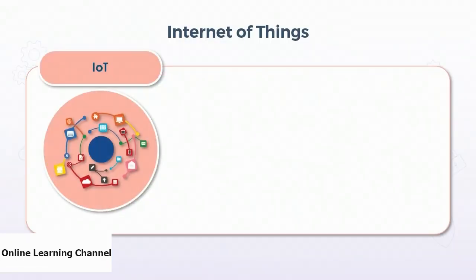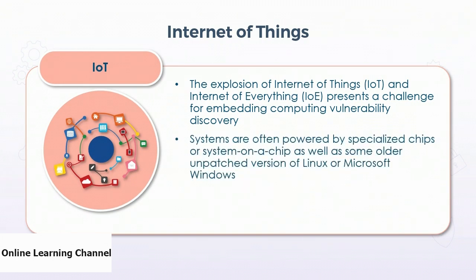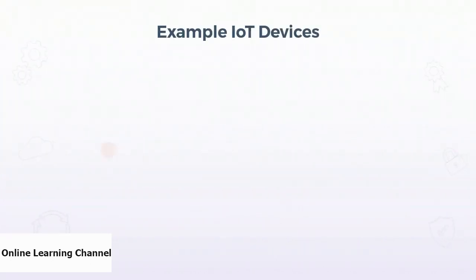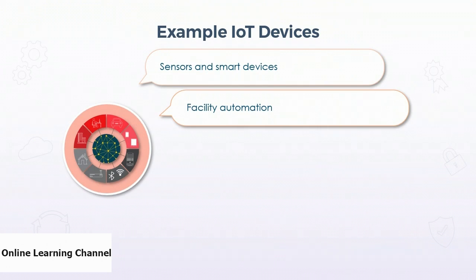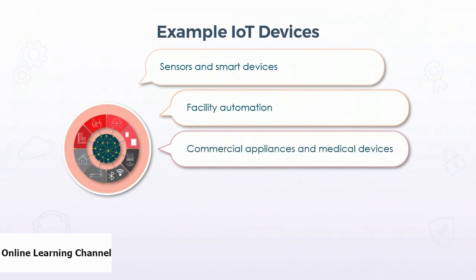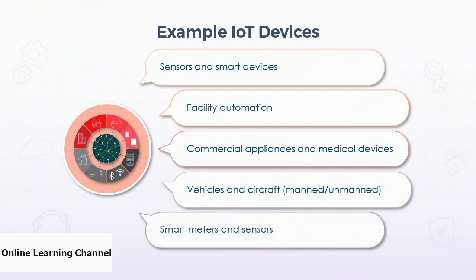The Internet of Things (IoT) presents a challenge for discovering embedded computing vulnerabilities. IoT systems are often powered by specialized chips or SoCs (system-on-a-chip), as well as older, unpatched versions of Linux or Windows. Examples of IoT devices include sensors and smart devices embedded in home alarm and environmental systems, facility automation at manufacturing firms and warehouses, supply chain components, commercial appliances, medical devices, vehicles, aircraft (manned and unmanned), smart meters and sensors for power, water, electric, and gas.